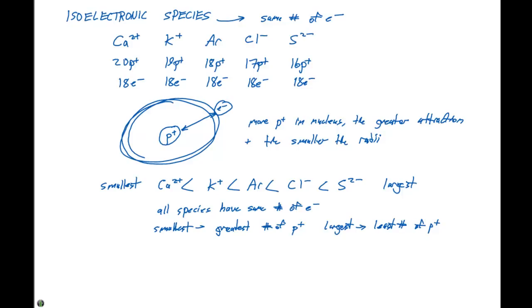So we can do the same exact thing if we compared magnesium two plus, neon, and sodium plus. If we wanted to arrange these from smallest to largest, we first have to look at the number of protons and the number of electrons we have.